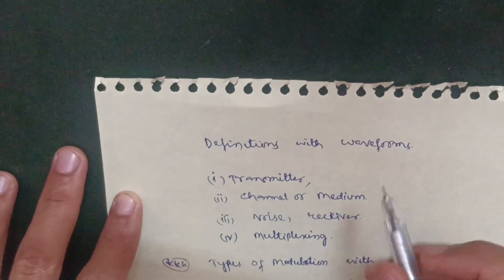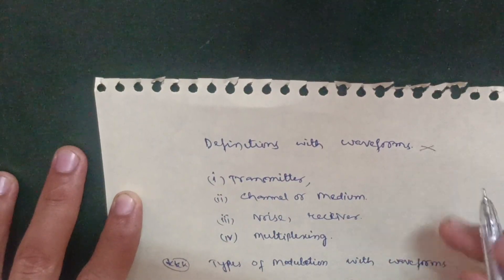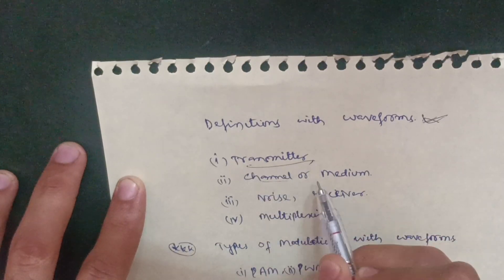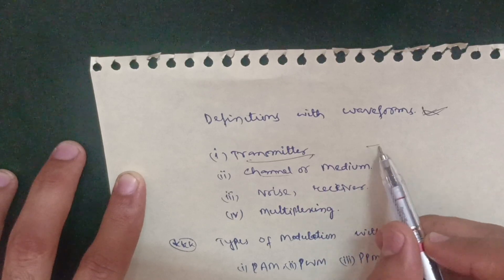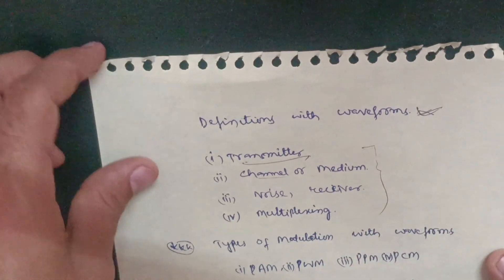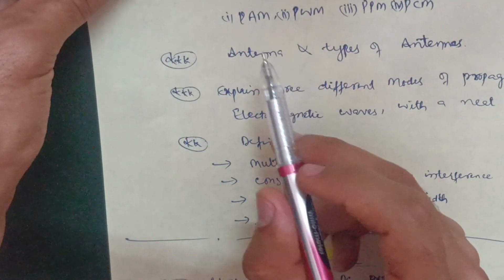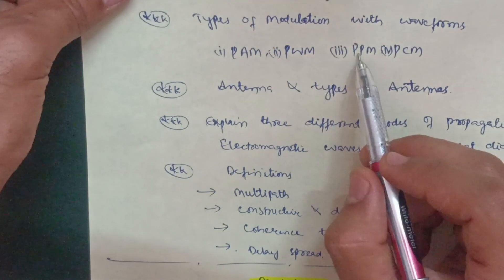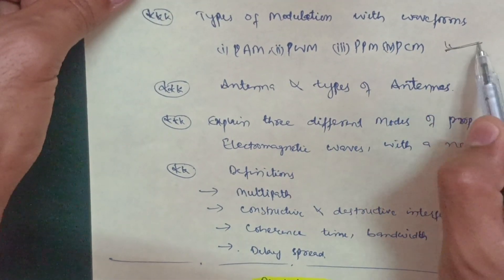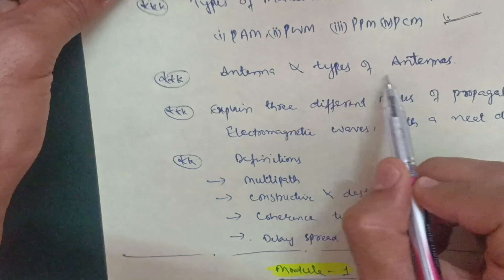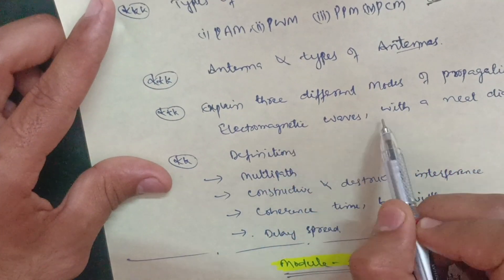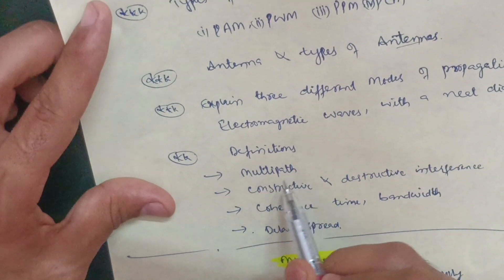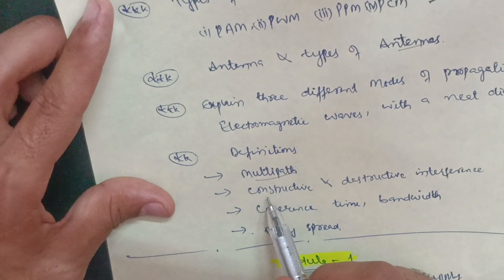In Module 4, types of communication systems is the most important topic. You also need to cover definitions with waveforms — waveforms are very important in this subject — including transmitter, channel or medium, noise, receiver, and multiplexing. Then cover types of modulation with waveforms: PAM, PWM, PPM, and PCM, which are the most important ones. Also cover antennas and types of antennas, and explain the three different modes of propagation of electromagnetic waves with a neat diagram.